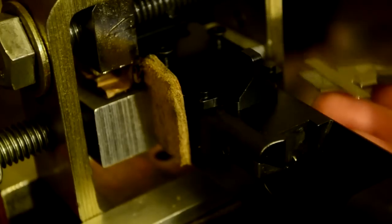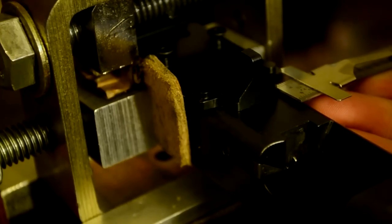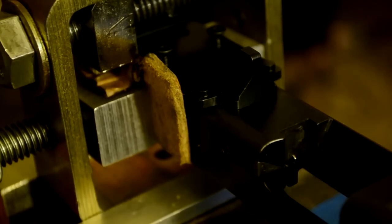Once you have the sight base installed, use a feeler gauge or a ruler to make sure the sight is properly aligned with the slide.